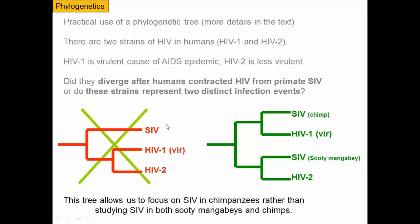It turns out that when we went back and made the phylogeny, HIV-1 and HIV-2 are the result of two separate infections from primates. And HIV-1, the virulent one, is more closely related to the SIV that we see in chimps.